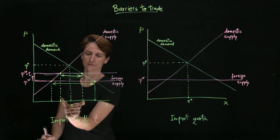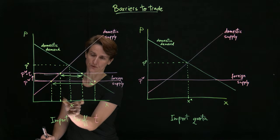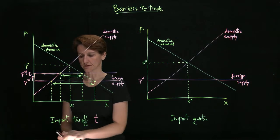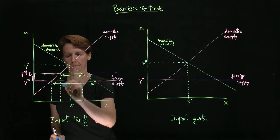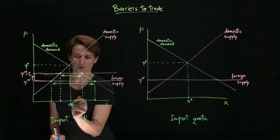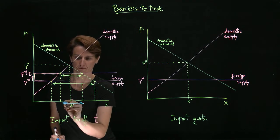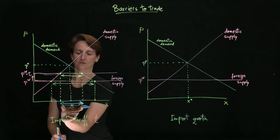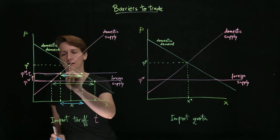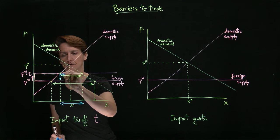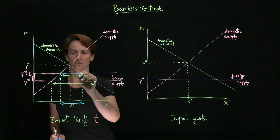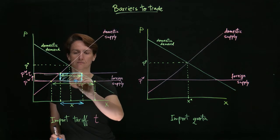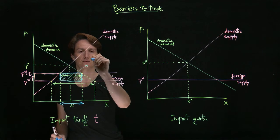However, part of it goes to tariff revenues. So tariff revenues are collected by the domestic government. They're proportional to imports. For each of the units still imported, we're adding the amount T to domestic coffers. So this area is tariff revenue.